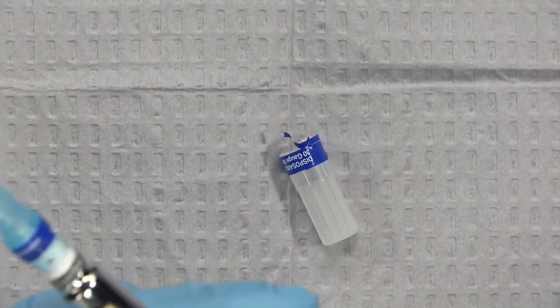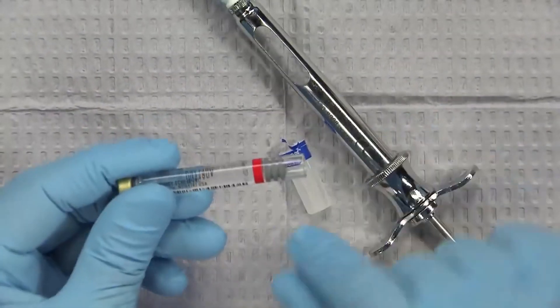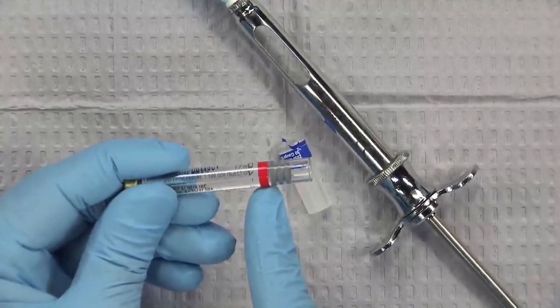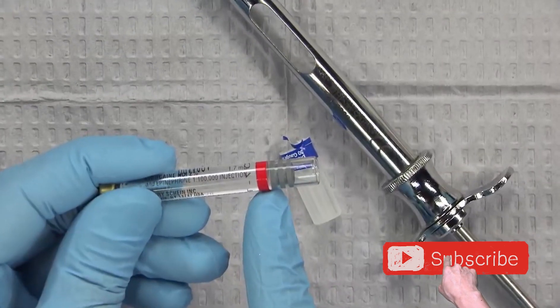After you've expressed that out, you can go ahead and remove your anesthetic. You can see that we've expressed out about 25% or 25 units of anesthetic. The plunger is almost to the red line right there.